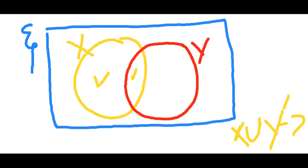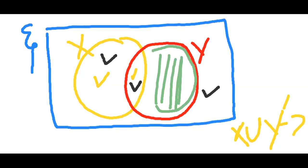For Y complement, we take all elements excluding the Y elements. I am using black ticks to mark Y complement, which covers this set, this one, and this part of X. After finding Y complement, we find X union Y complement — that is everything except the part belonging only to Y, shown here with a green line.